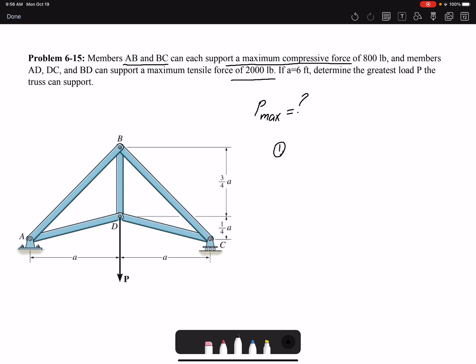We need to have symmetry in loading, in geometry, and also material. In statics, we don't deal with the material, but here we can assume that the material is the same. The geometry is symmetric, and the loading is symmetric as well. So we can say that truss is symmetric.